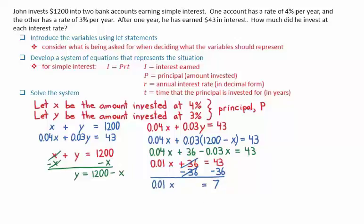We can then solve for x by dividing both sides by 0.01. This gives x = 700. We can then use the equation y = 1,200 - x and substitute x = 700. This gives a result of y = 500.